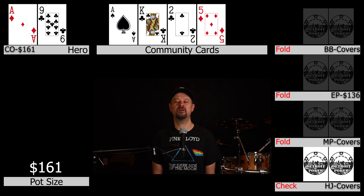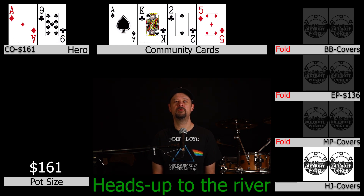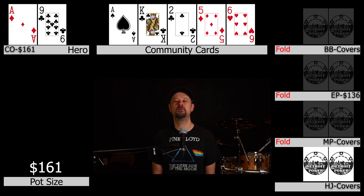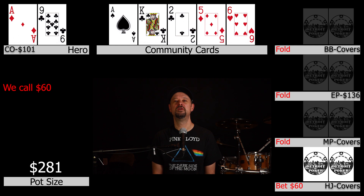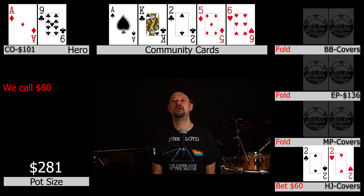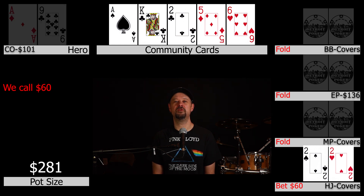The turn comes a five of diamonds. The hijack checks to us and we check back for pot control. The river comes a six of hearts. Our opponent quickly assembles a bet and slides $60 over the line. We think for a few seconds and call $60. Our opponent turns over pocket deuces for bottom set. We quietly muck and watch the hijack collect our chips. You're probably starting to get the difference between 1/2 and 2/5.